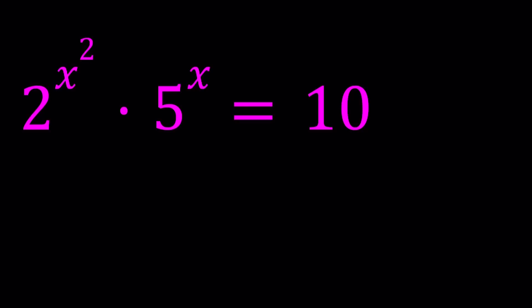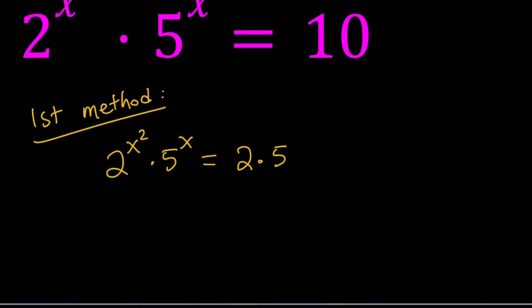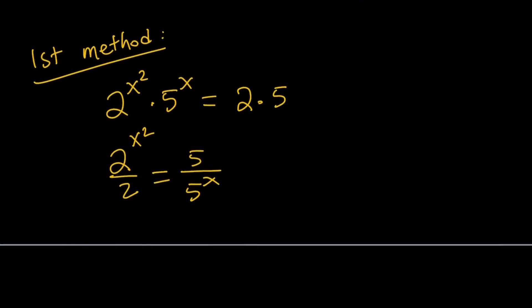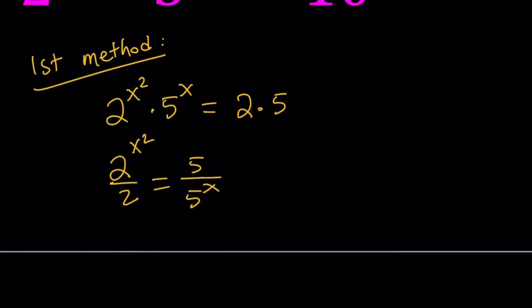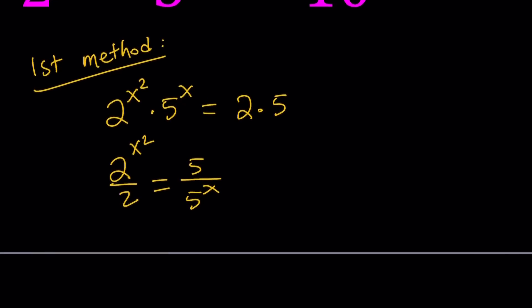For my first method, I'm going to separate the powers. 10 can be broken down into 2 times 5, so let's go ahead and write it as such. And then I'm going to bring the 2's together and the 5's together. So I'm going to write it as 2 to the power x squared divided by 2, and that equals 5 divided by 5 to the power x. By the way, we're not necessarily looking for integer solutions, we're looking for real solutions. Are there complex solutions? Something to think about.